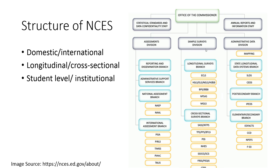The second division is the Sample Surveys Division. Sample surveys are generally surveys that NCES collects specific to either different grade levels or different purposes for understanding education in the United States. Within the Sample Surveys Division, surveys are generally categorized as either longitudinal — following students or schools over time — or cross-sectional — providing a snapshot at one point in time about some aspect of the U.S. education system.